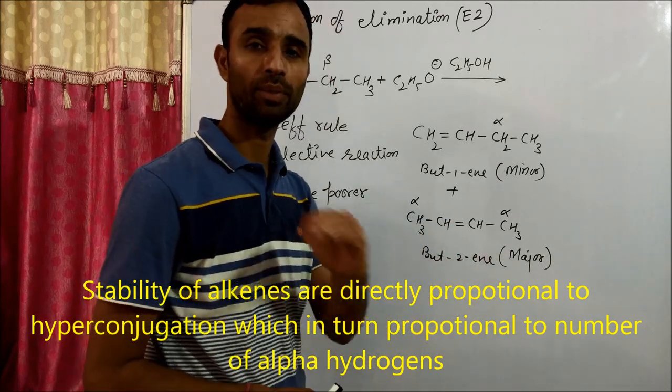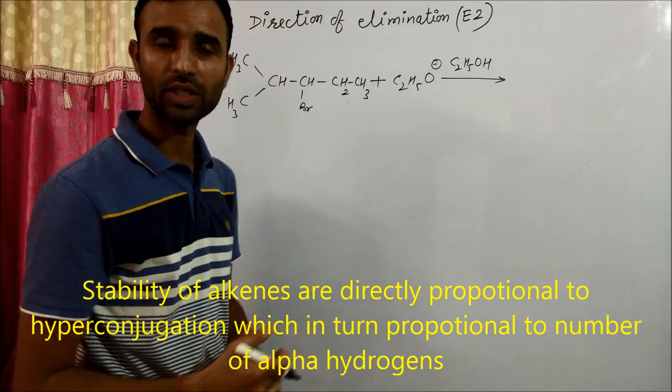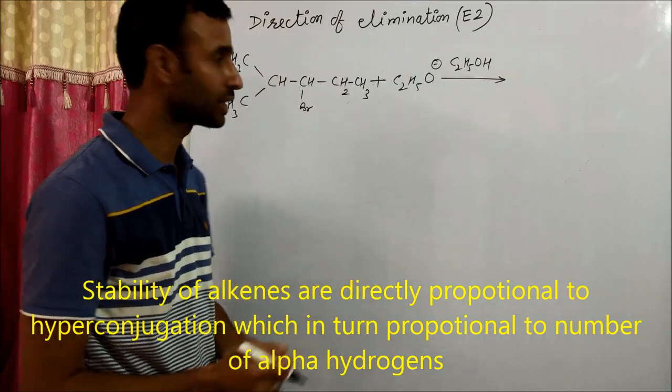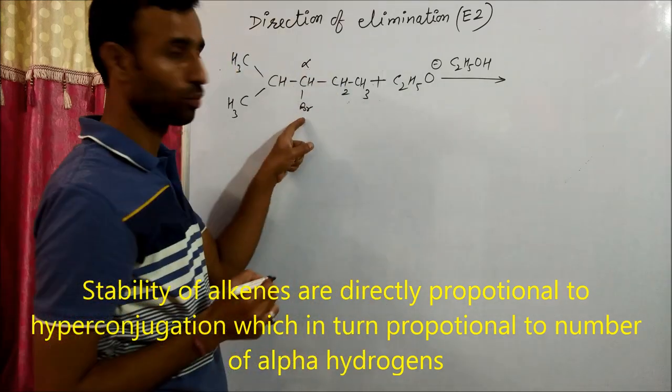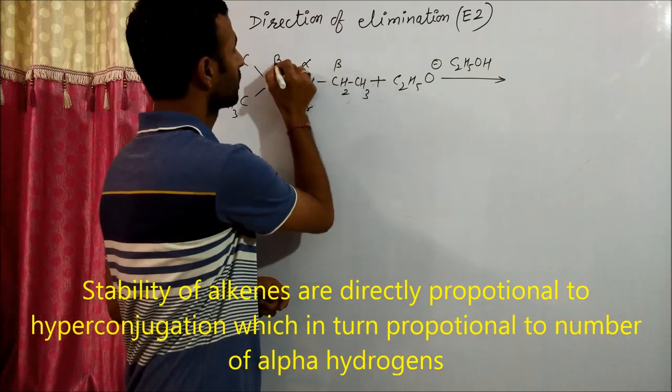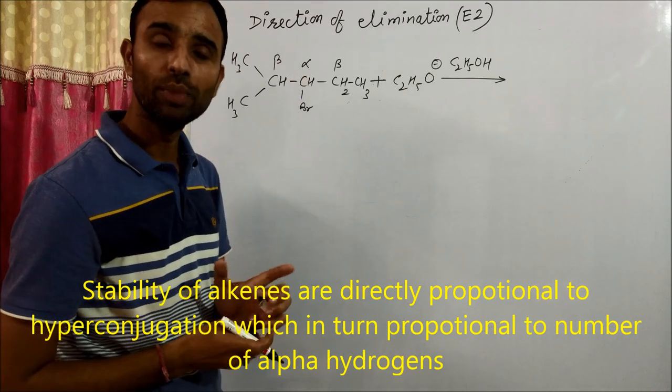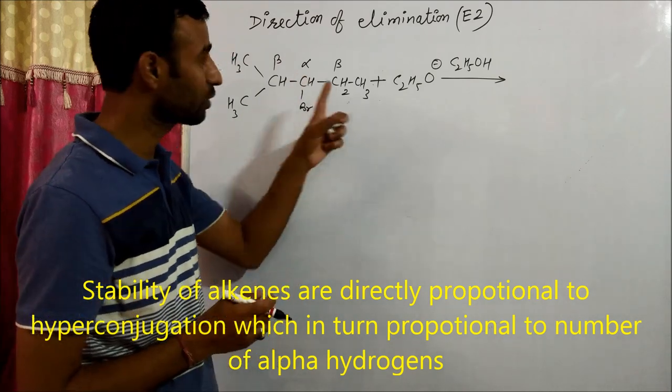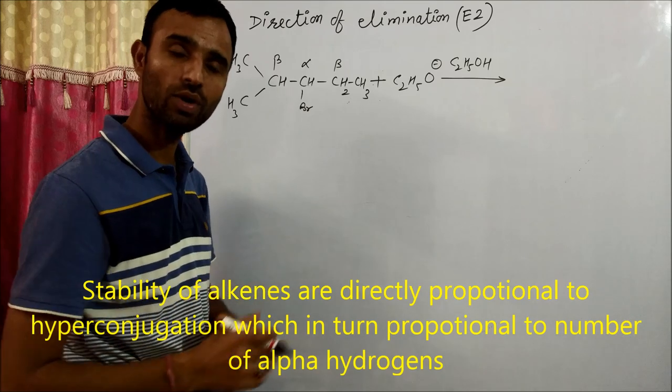That's why but-2-ene is more stable than but-1-ene. So this is also the explanation that why but-2-ene is the major product. Let us take this case. In this case, bromine attached to carbon, that is alpha carbon. Again we have choice. There are two beta hydrogens. So which beta hydrogen is preferably removed as per Zaitsev's rule?